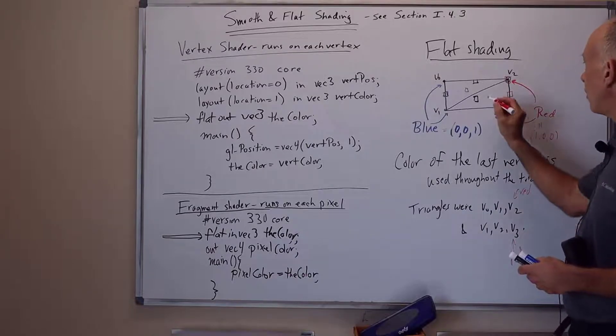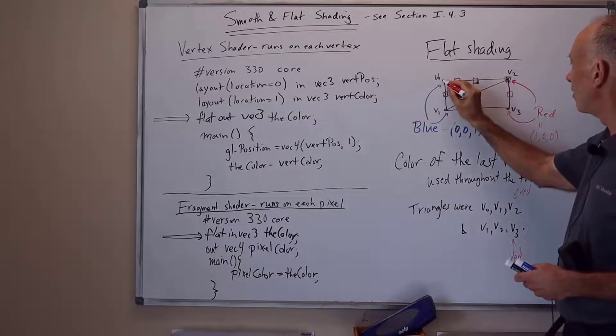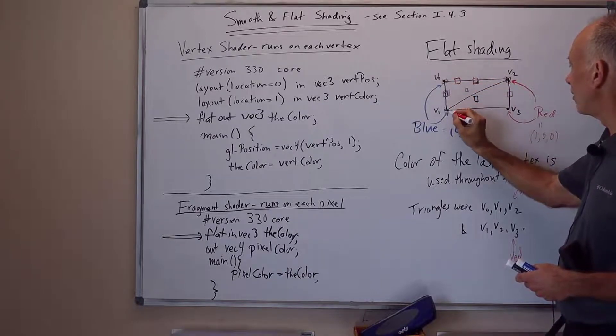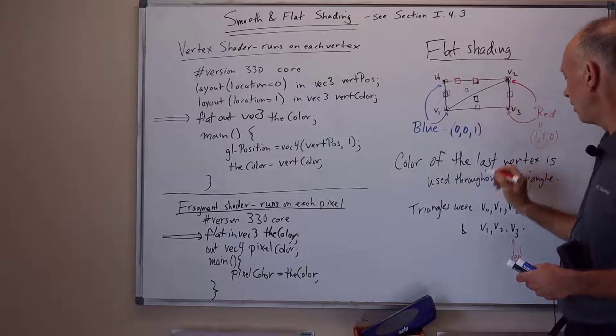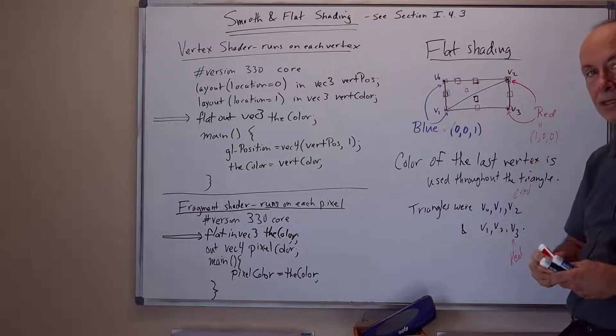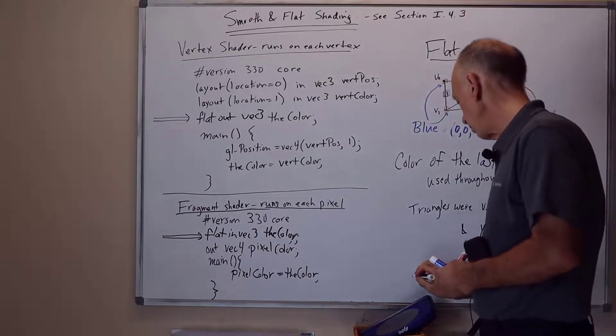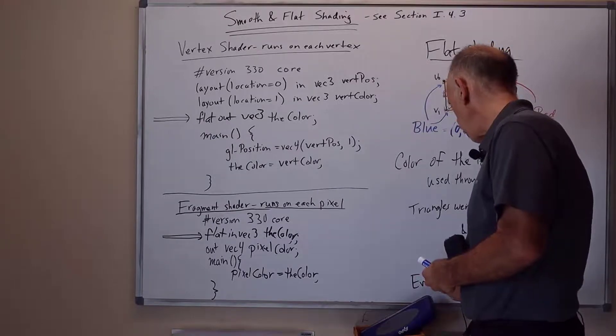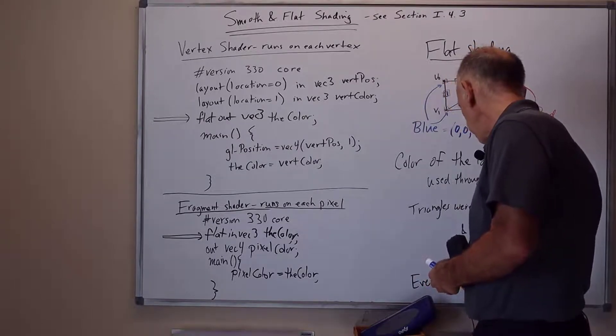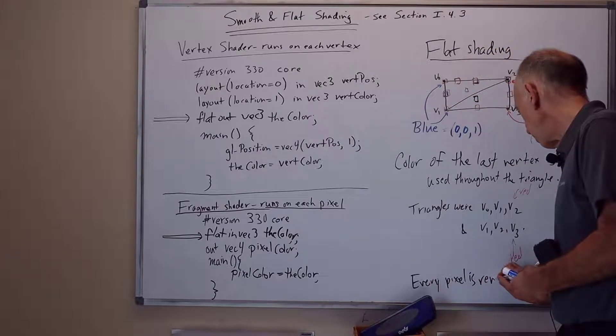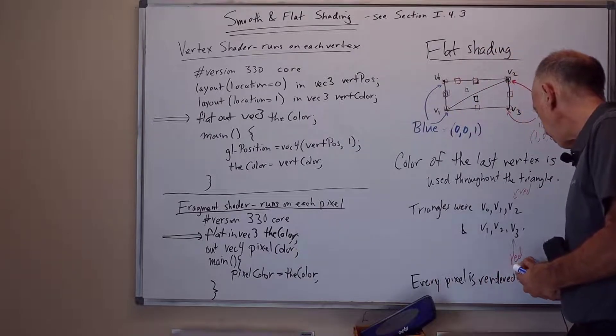And so what happens then is every pixel in the triangle, even the ones off at the very end, is rendered as a red pixel. Every pixel is rendered red in this example.